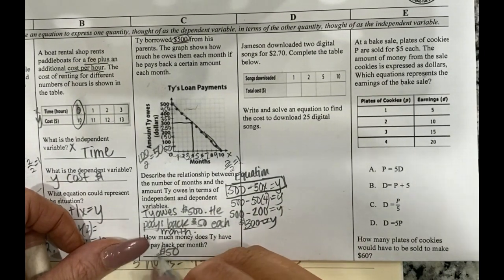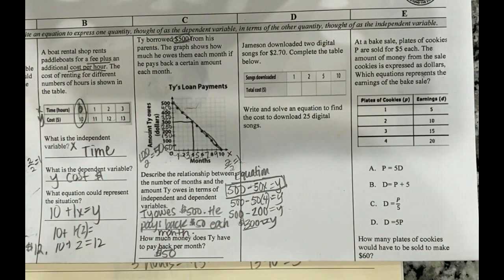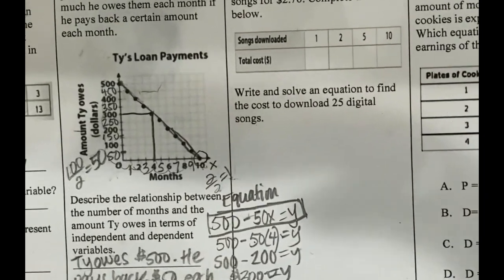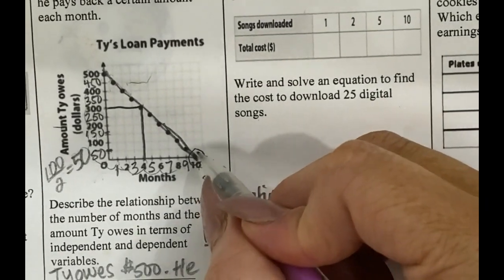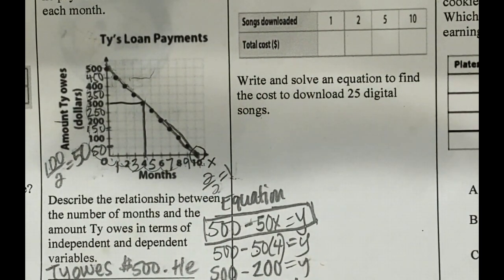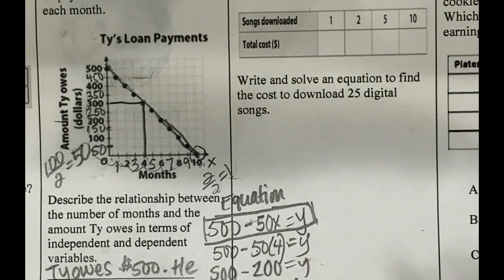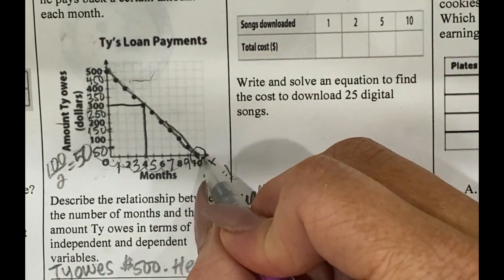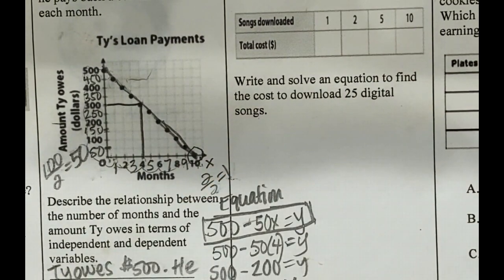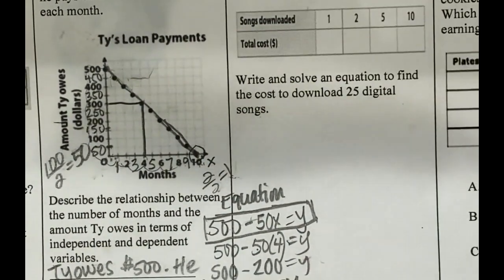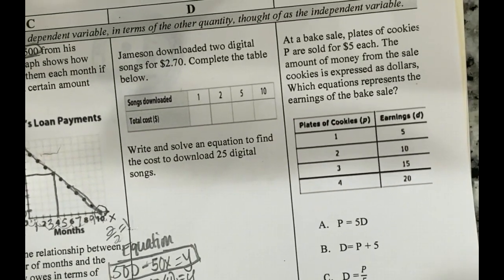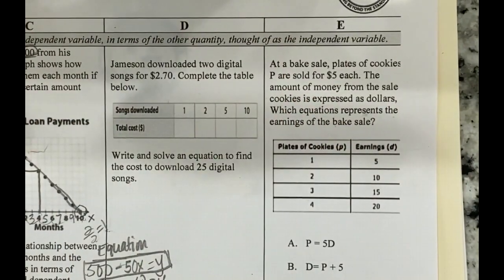Okay. So how much money does Ty have to pay back per month? We said $50 per month. You can also let's make sure that we understand what this bottom, what this 10 means right here. When this is at 10, it is zero. So what do you think that means when it's at 10, it's zero? So this would mean that at 10 months, Ty has paid it back. He owes zero amount of dollars. So at the 10 month mark, he's paid off the loan.